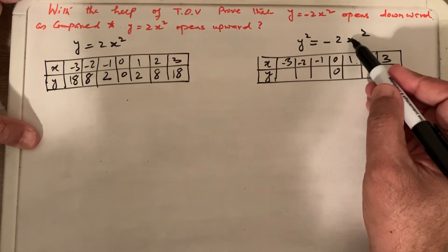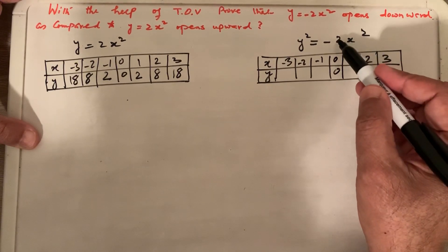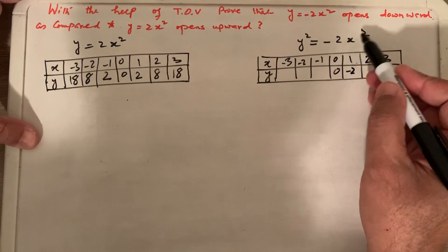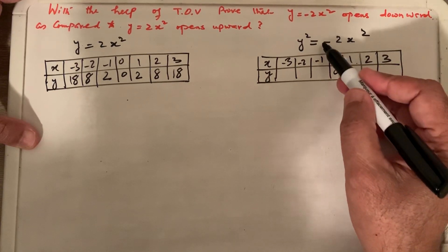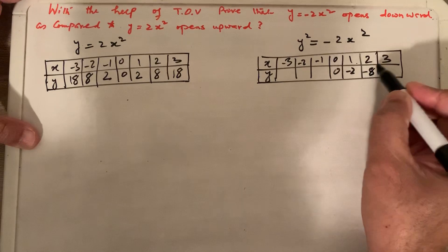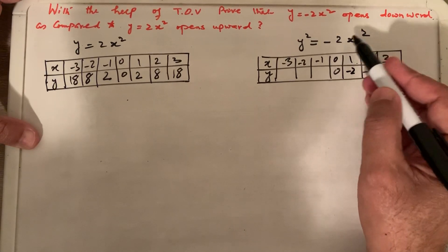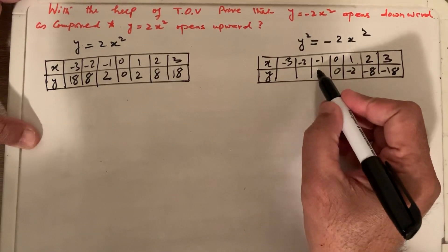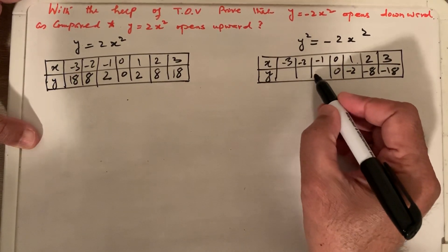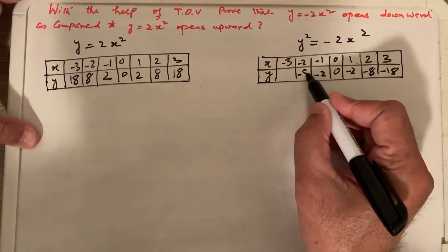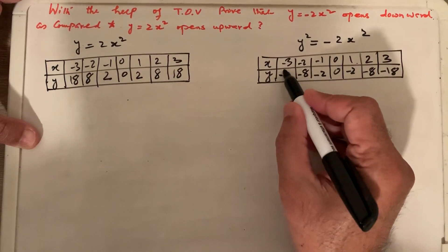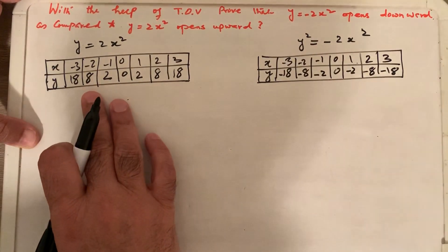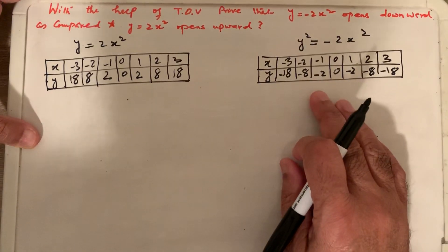For y equals minus 2x squared: when x equals 1, it comes to 2 but the negative makes it negative 2. When x equals 2, it gives 8 but negative makes it negative 8. When x equals 3, it gives 18 but negative makes it negative 18. Similarly for x equals minus 1, minus 2, minus 3, we get minus 2, minus 8, and minus 18.